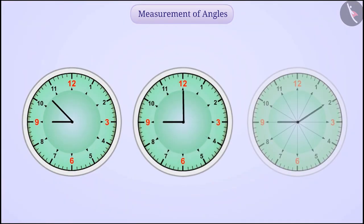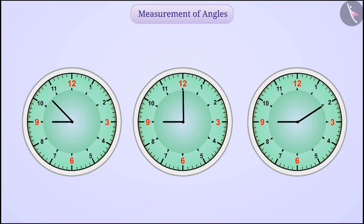In a clock, if we place one needle in a fixed position and rotate the other needle, we will get different angles.